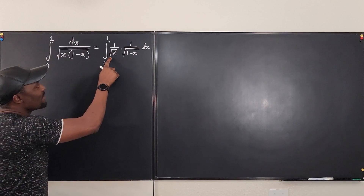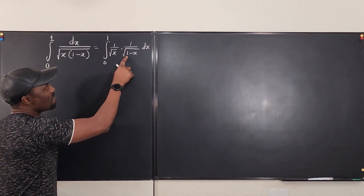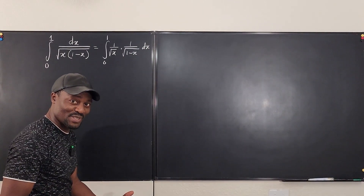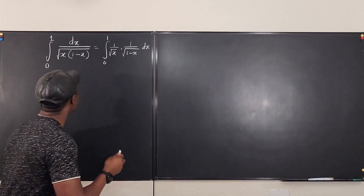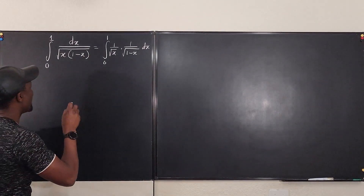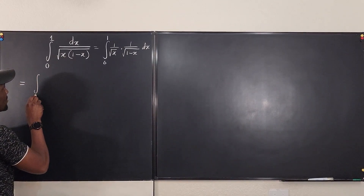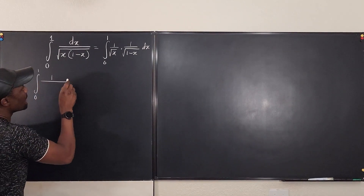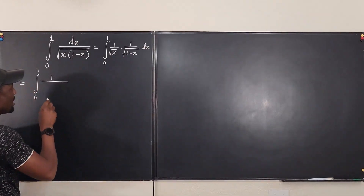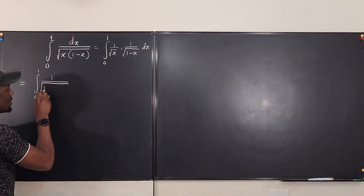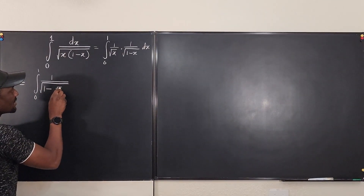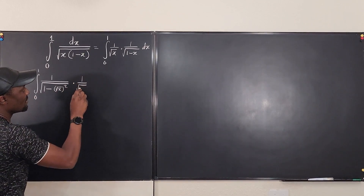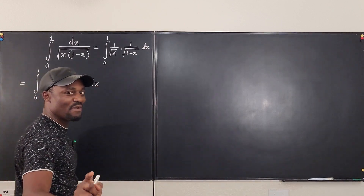Because I have the square root of x here, I can make the denominator into 1 minus something squared, so I can eventually do my trig substitution. I'm going to rewrite 1 minus x as the square root of 1 minus (√x)², so the integral from 0 to 1 becomes: 1 over the square root of 1 minus (√x)² times 1 over the square root of x, dx.